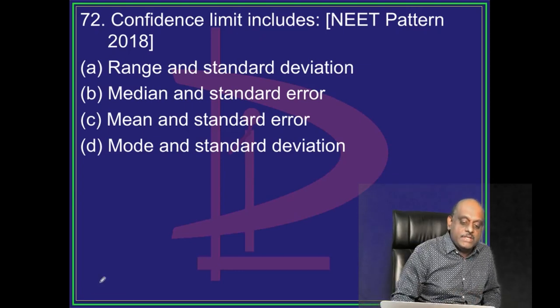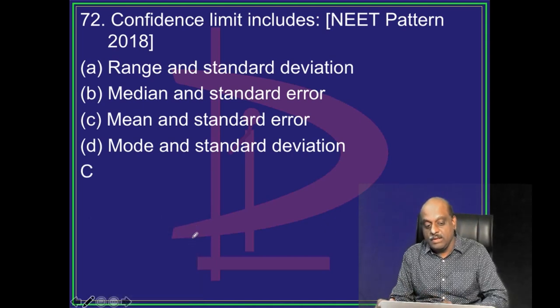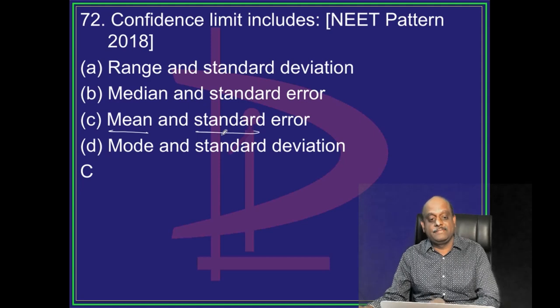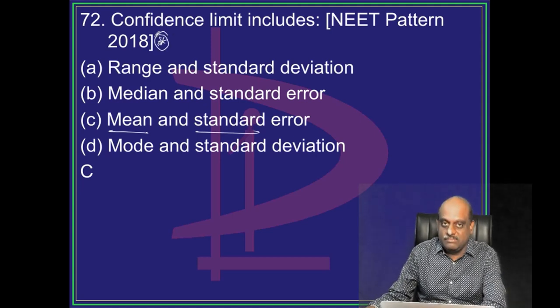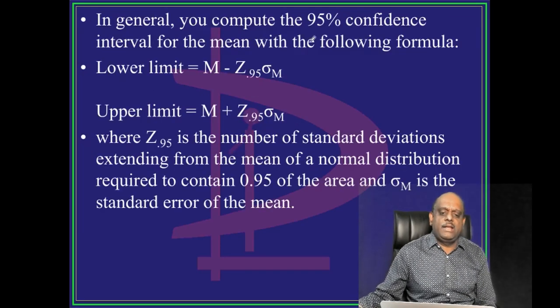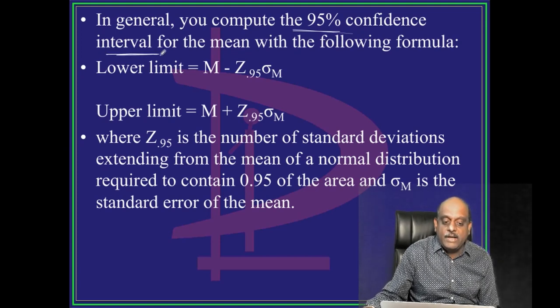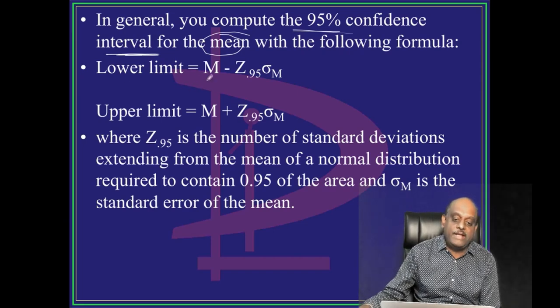Confidence Limit, what does it include? It includes mean and standard error. This is the question asked in the last year, NEETPG. In general, you compute the 95% confidence interval for the given mean by using this formula. What is that?